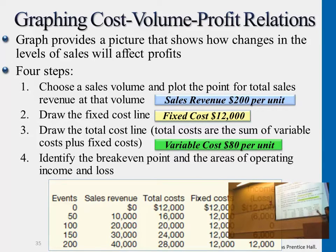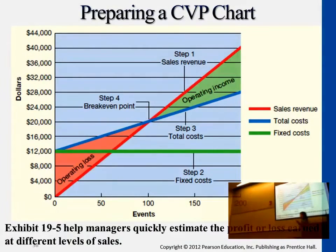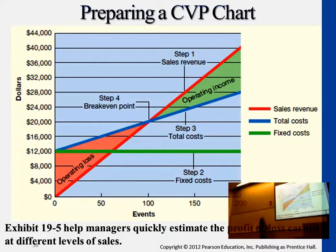Those equations allow you to plug in a data point — plug in the number of events or the cost information — and get each season's potential sales revenue and cost information. But what if we wanted to do analysis at various different levels of events and sales revenue? It would be very useful to plot all the data points from the equation, rather than just specific points.